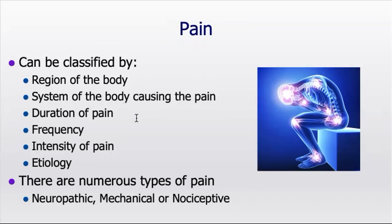We can also talk about the duration of pain — chronic, subacute, acute — as well as the frequency: whether it's intermittent, persistent, post-exertional, post-motor vehicle accident, or an isolated incident. We can discuss the intensity — mild, moderate, severe — and how that's changing over time. We can also look at the etiology or cause of pain: infectious, cancerous lesion, arthritis. That gives a lot of information on appropriate treatment strategies, whether exercise is contraindicated or more indicated.